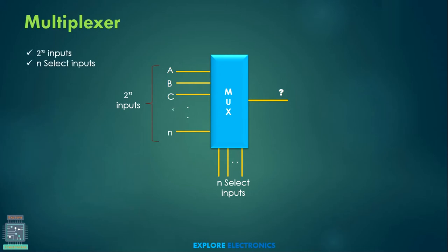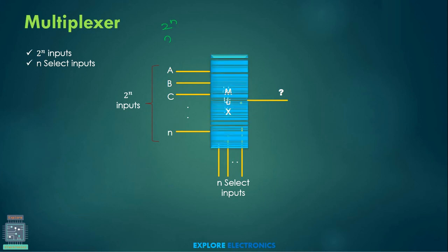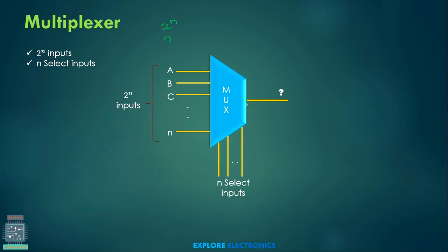So a multiplexer is a device having 2^N inputs, where N select lines are required. This multiplexer has only one output — that is why the block can be represented as shown, indicating a multiplexer.